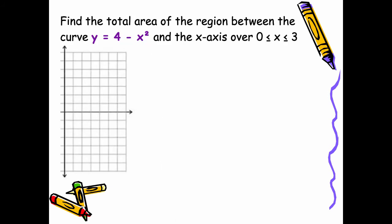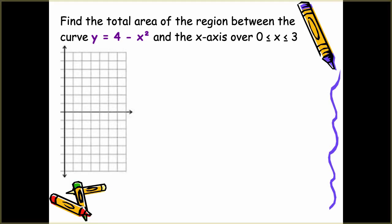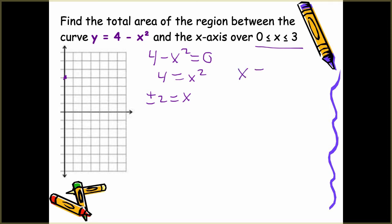Here it says: find the total area of the region between the curve y equals 4 minus x squared and the x-axis over the interval 0 ≤ x ≤ 3. This curve is a downward-facing parabola with y-intercept at 4. We want to know where the zeros are, so we set it equal to 0 and solve: 4 equals x squared, giving plus or minus 2 equals x. Since our interval is from 0 to 3, we only want x equals 2. This is where it crosses the x-axis.